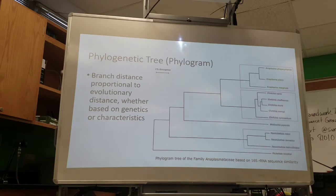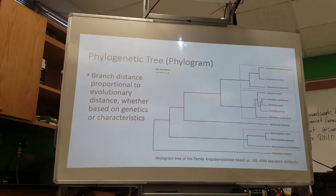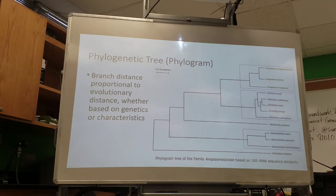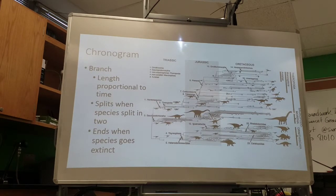A phylogenetic tree is another very important type of diagram. It has a bit more information — while it doesn't list traits, the distances shown are supposed to reflect evolutionary relatedness. So you could say, for example, that Ehrlichia schaffensis and Ehrlichia moris are probably more closely related to each other than Anaplasma phagocytofila and Anaplasma platys, because their distance is closer together.